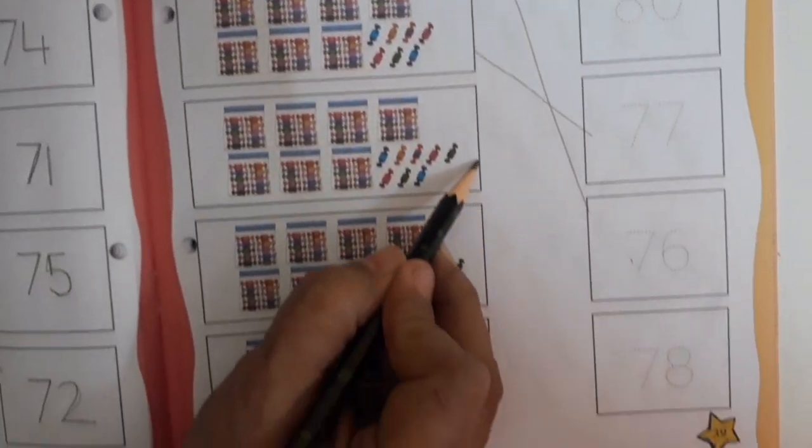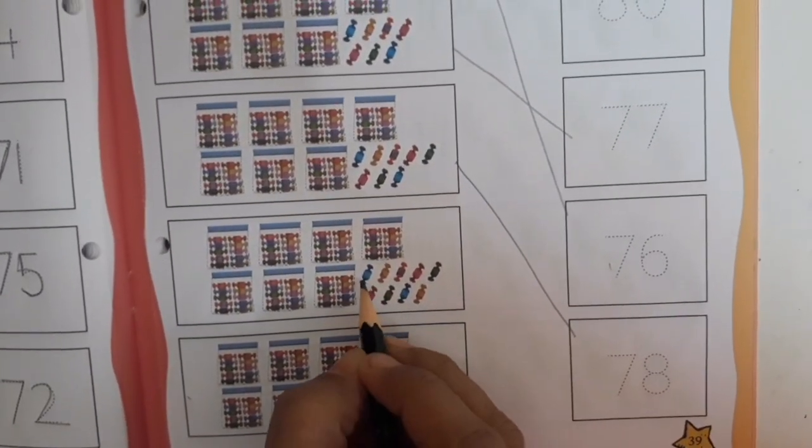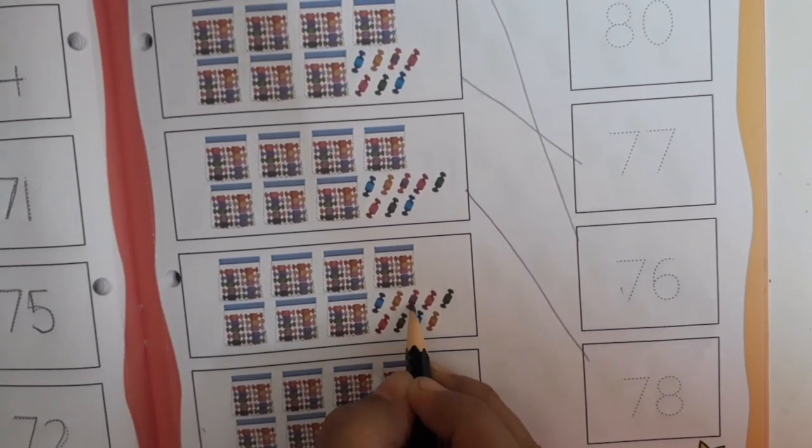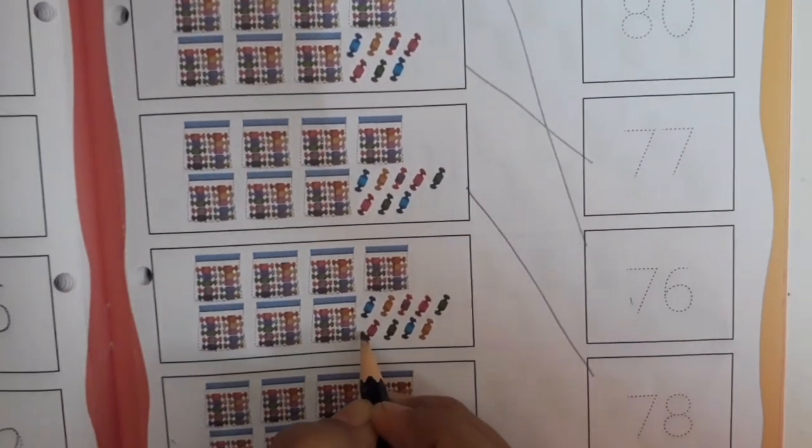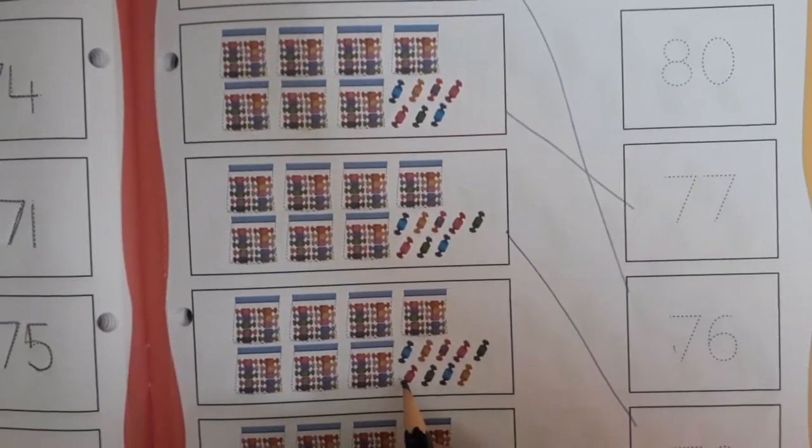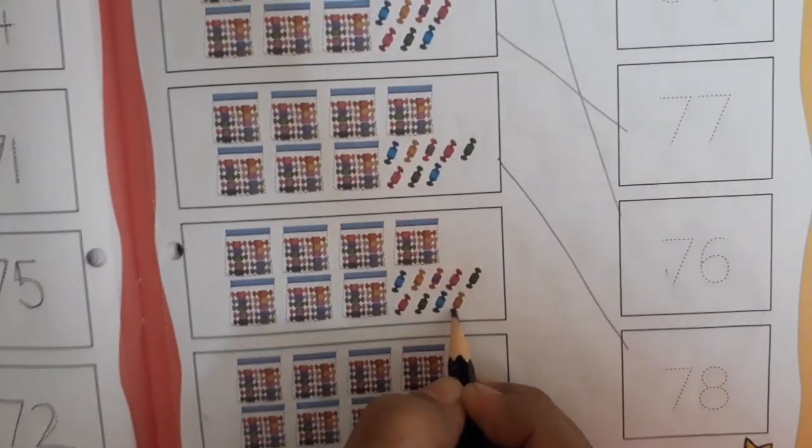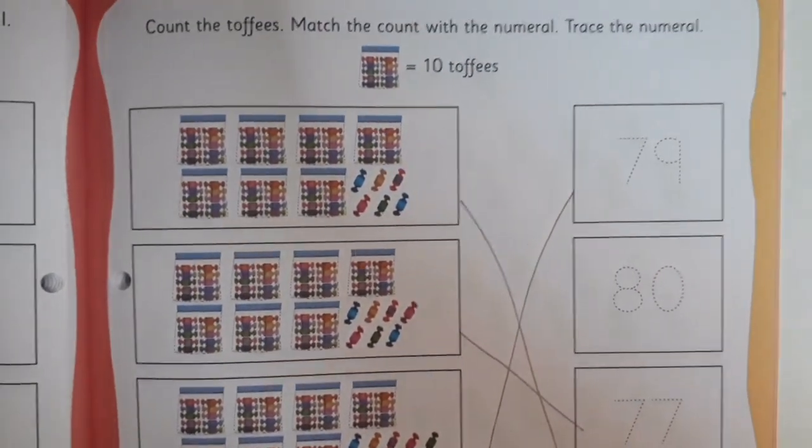Very good, children. I hope you are also counting with me. Now once again: 70 chocolates and 71, 72, 73, 74, 75, 76. What comes after 76? 77, 78, and 79. So we are going to match with 79.